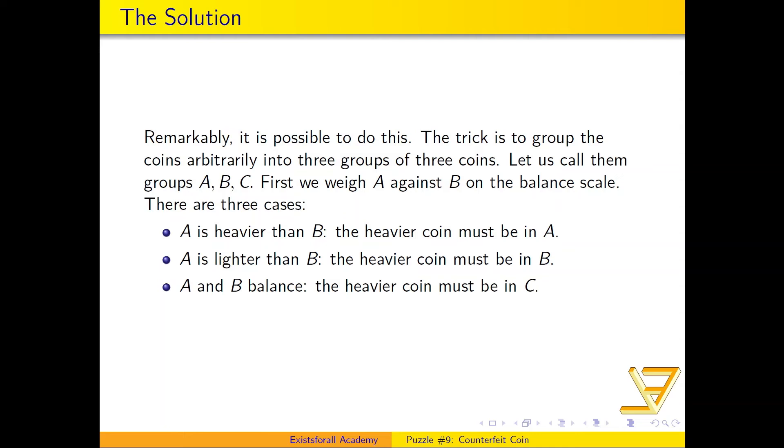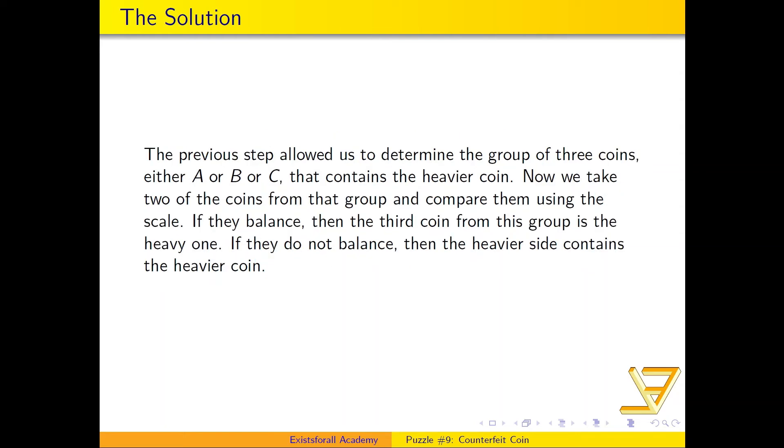And after that, what we do is that we just take two coins from that final group that we deduce the heavier coin is in, and we compare them. And if the two coins that you chose they balance, that means the third coin is the one that's heavier.